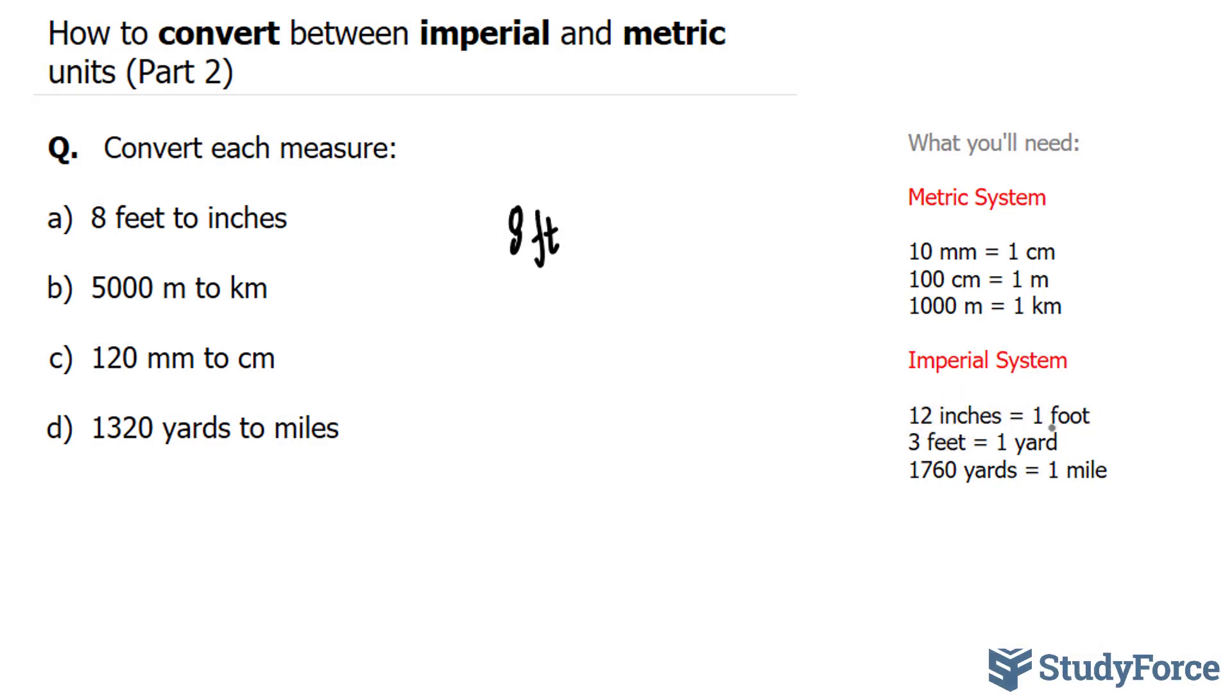Now if you remember from part one, make sure that you watch part one. Every conversion ratio can be written as two different fractions. For example, this ratio can be written as 12 inches over 1 foot, or it can be written as 1 foot over 12 inches.